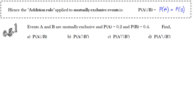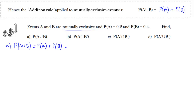Now let's use that in an example. We've got two events that are mutually exclusive and we know the probabilities of each of them. What's the probability of the union? We're going to use the fact we've just written down — they're mutually exclusive, so it must be the probability of A plus the probability of B. So we simply add those together.